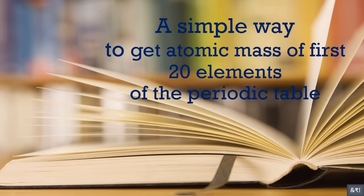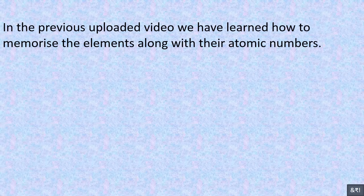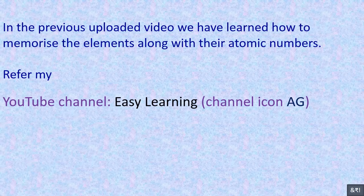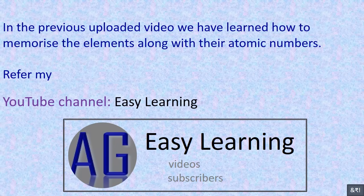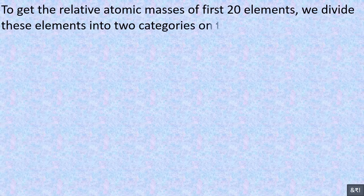A simple way to get the atomic mass of the first 20 elements of the periodic table. In the previous uploaded video we learned how to memorize the elements along with their atomic numbers. To get the relative atomic masses of the first 20 elements, we divide these elements into two categories on the basis of their atomic numbers.